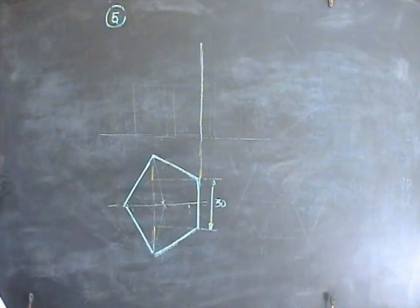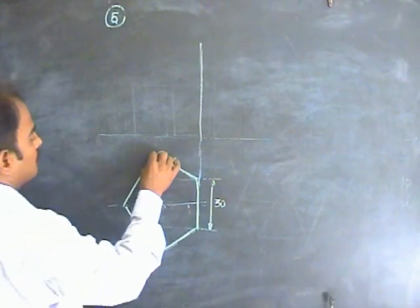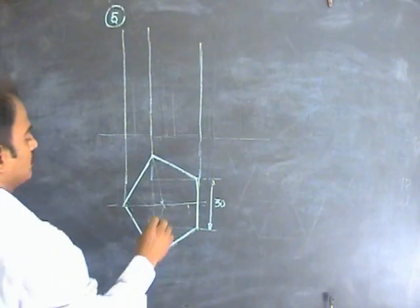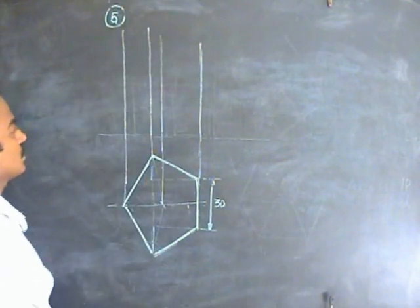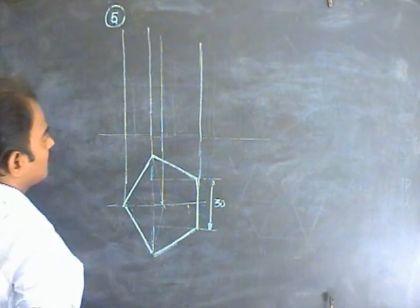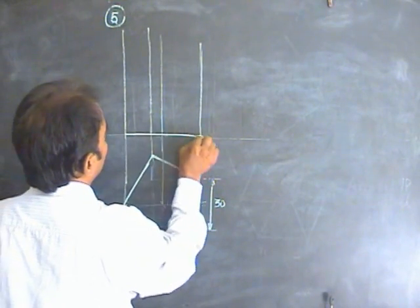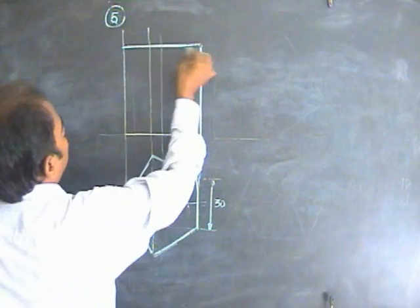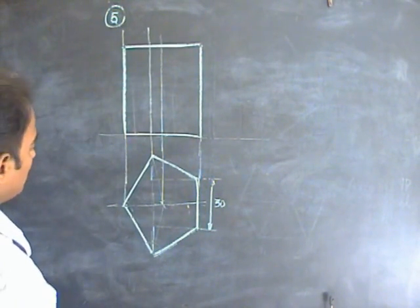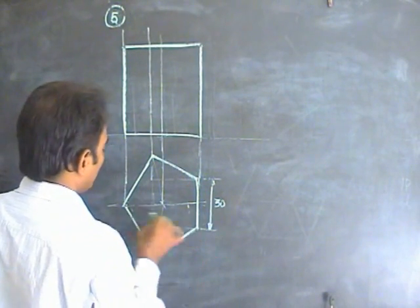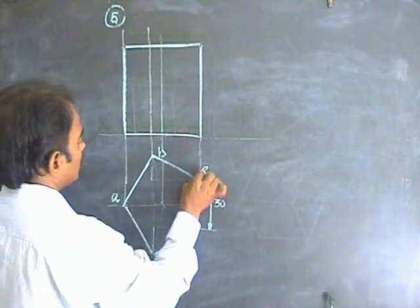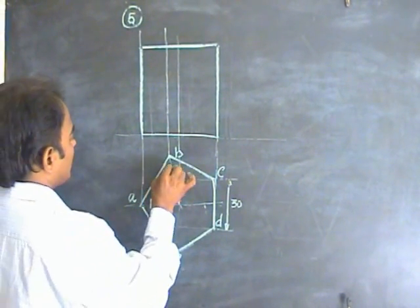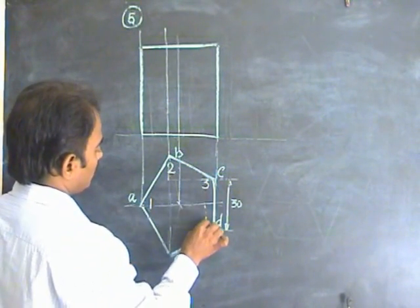Project the front view. The height of the pentagonal prism is given as 70 mm, so take 70 mm height and draw the front view. Name the pentagon vertices as A, B, C, D, and E on the outer face, and 1, 2, 3, 4, 5 on the inner face.